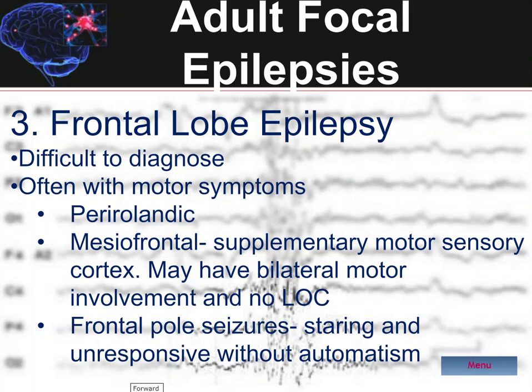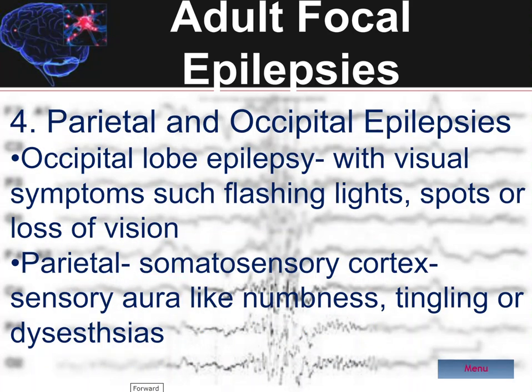In the dorsolateral cortex and frontal pole seizures, these are characterized by staring out and unresponsiveness without automatisms, and may be difficult to distinguish from multiple other seizure types. Another category of diagnostic confusion can occur with parietal and occipital lobe epilepsies, given their rich connections with the temporal and frontal lobes.